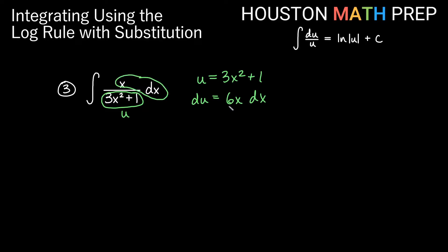So replacing x dx, I could divide both sides by 6 here to see what works out. So the replacement for this will be one sixth du. Just like the last one, we'll go ahead and bump out the one sixth constant multiple out front. So we'll say one sixth integral of du over u. And now we have our log rule exactly: one sixth ln of the absolute value of 3x squared plus 1, all of that plus c.